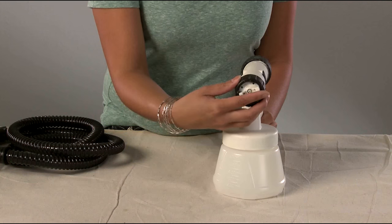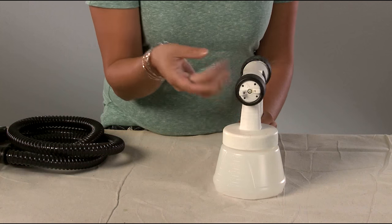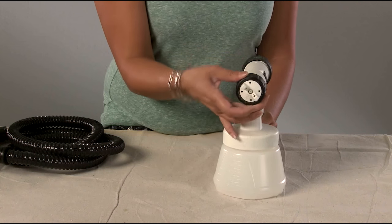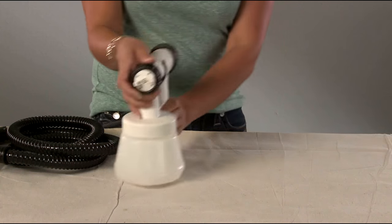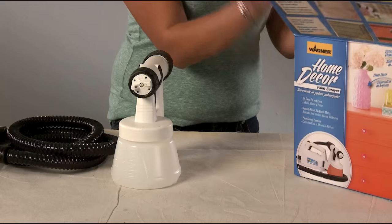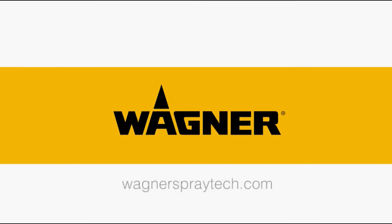Both methods will clean your gun effectively, but the disassembly method ensures no paint or stain dries on internal components of the sprayer. For painting tips and in-depth instructions, refer to the Home Decor Sprayer Owner's Manual, call our customer service at 800-760-3844, or find us online at wagnerspraytech.com.